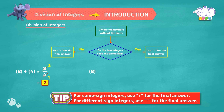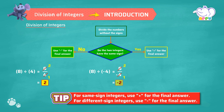8 divided by minus 4. We first divide 8 by 4, which equals 2. We have to place the sign for this quotient. Here 8 is a positive integer and minus 4 is a negative integer. So the answer is minus 2.